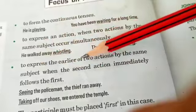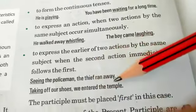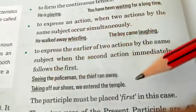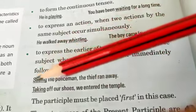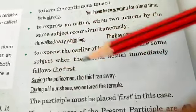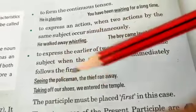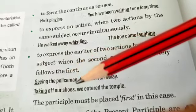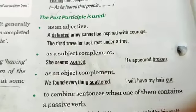Present participle is also used to express the earlier of two actions by the same subject when the second action immediately follows the first. For example, 'seeing the policeman, the thief ran away' — after the first action is completed, the second action takes place immediately, and we use the present participle.